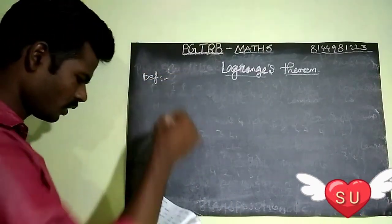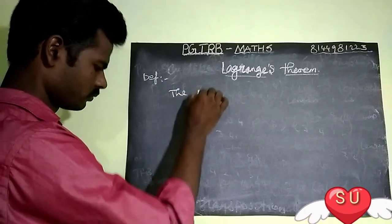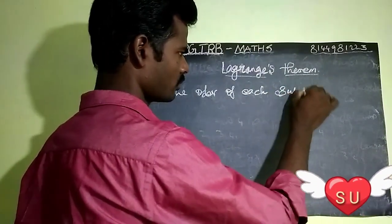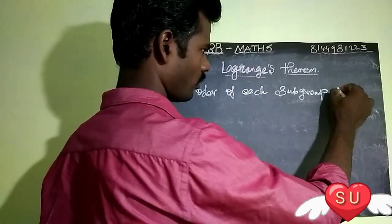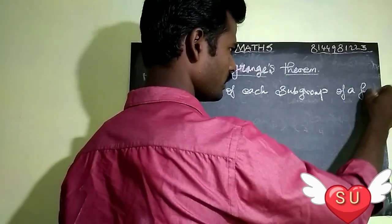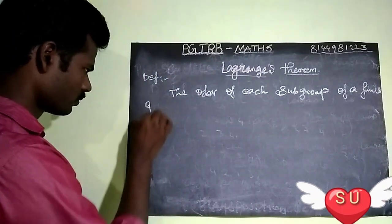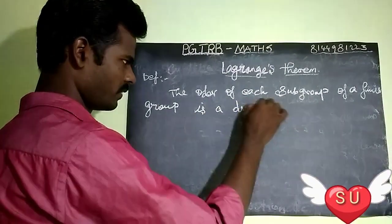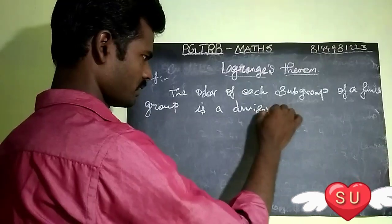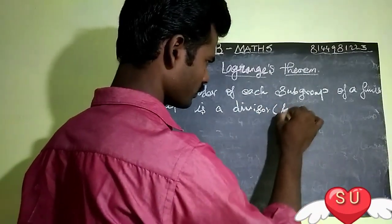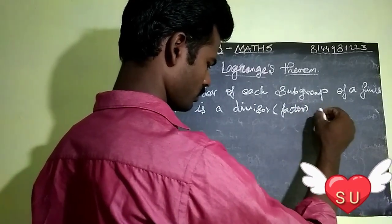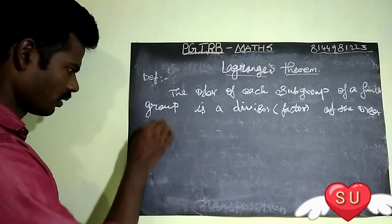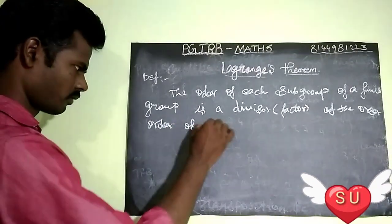In Lagrange's theorem, we will tell you the order of each subgroup. Each subgroup of a finite group — so a finite group — is a division, meaning a factor of the order of the group.